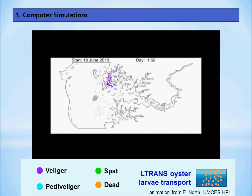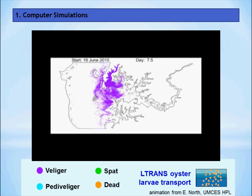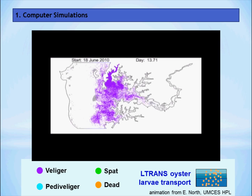I'm going to start the animation right now. The purple dots are the veliger oyster larvae, and you can see them being pushed back and forth by the tides and distributed throughout the river.